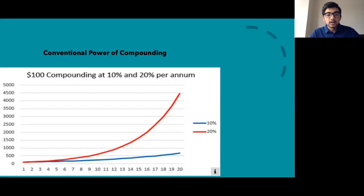by the 20th year, the 20% compounding will give me about $4,500 dollars or rupees, whatever your currency is, and a 10% compounding will give you 500.